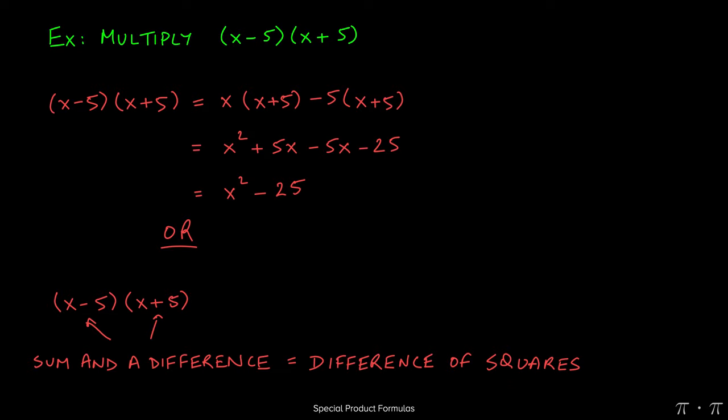As we discussed in a previous video, we square the first term, which is x, minus we square the second term, which is 5.